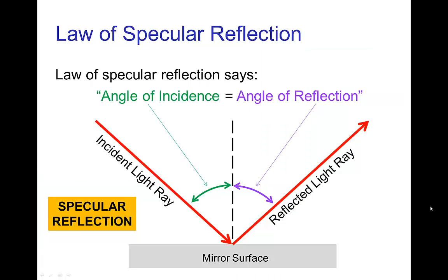And this is given by the law of specular reflection which says that the angle of incidence equals the angle of reflection. So these angles are measured from a line perpendicular to the surface of the mirror, and it says that the angle of the incoming incident light ray is the same angle as the reflected outgoing light ray.